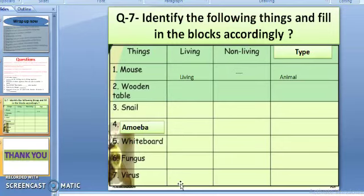Now one more question. Question number seven. You have to identify the following things which are given in this table and fill the blocks accordingly. The first one I have done for you. Mouse is a living thing and it is an animal. So like this you are going to do the rest of these: wooden table, snail, amoeba, whiteboard, fungus, virus. You have to tell whether they are living or non-living and their types.